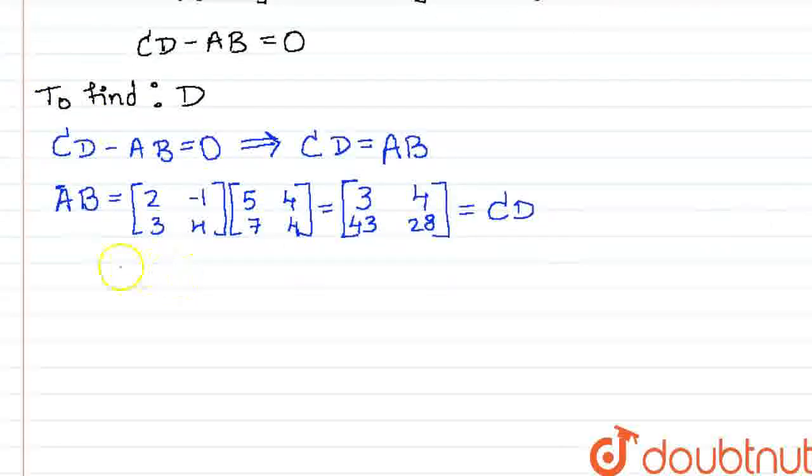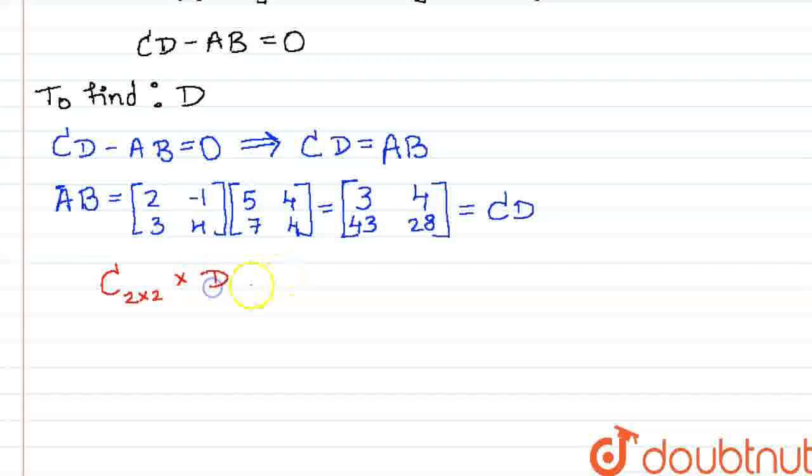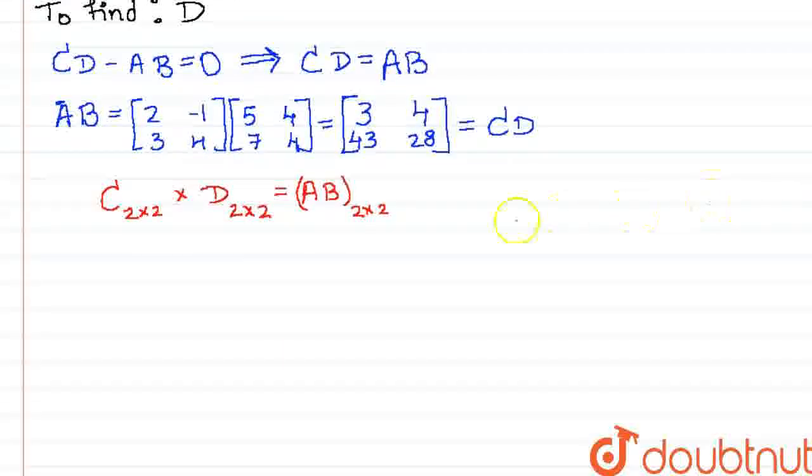Now, let us take a look at the dimensions. C is a 2 by 2 matrix, and D is a matrix we have to find. The matrix AB is also a 2 by 2 matrix. Hence, so as to preserve the 2 by 2, D also has to be a 2 by 2 matrix.